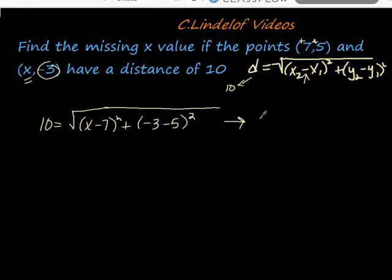I'm gonna clean this up a little bit. I'm gonna get 10 is equal to the square root of (x-7) squared. Then look, negative 3 minus 5 is negative 8, and negative 8 squared equals positive 64. So that's where that's coming from, positive 64.